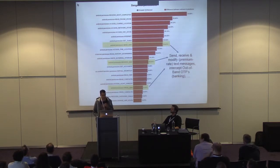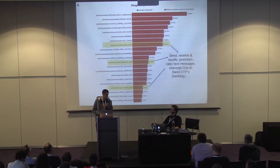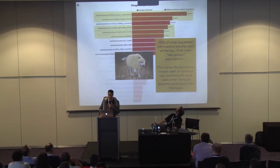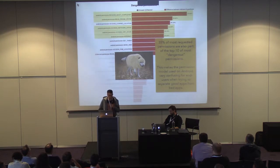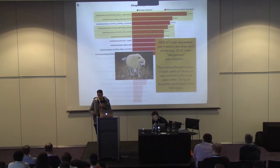Other dangerous permissions include send SMS, receive SMS, and write SMS — those are really used to steal banking tokens and send premium-rate messages to Eastern European numbers. The conclusion on permissions: 55% of the most requested permissions are also part of the top 10 most dangerous permissions, making it very difficult for a user to distinguish malware from legitimate apps based on the permission model alone.